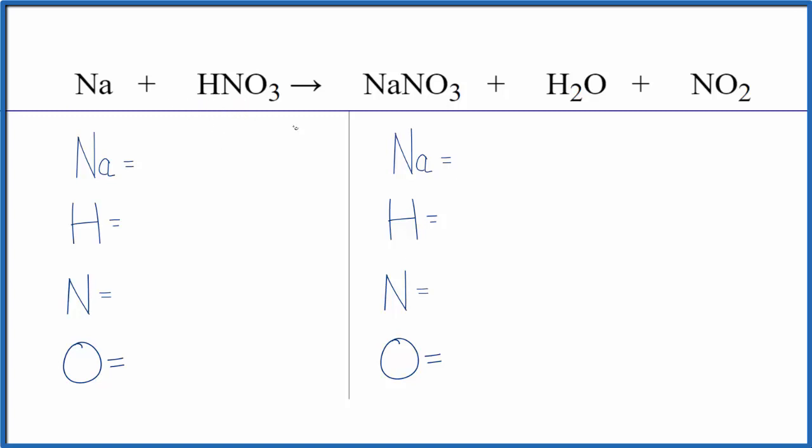So the first thing we do to balance equations, we count up the atoms on each side. We have one sodium, one hydrogen, one nitrogen, and three oxygen atoms for the reactants.